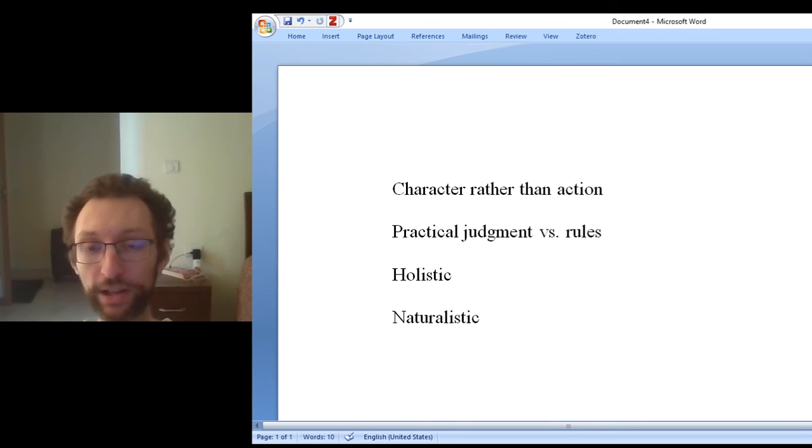And then finally, point number four: naturalism or naturalistic. For Aristotle and for a lot of virtue ethicists, ethics depends on the kind of thing that we are. We are a human being. By nature we are human beings. Our nature is to be whatever it is that we are, whatever this species is.